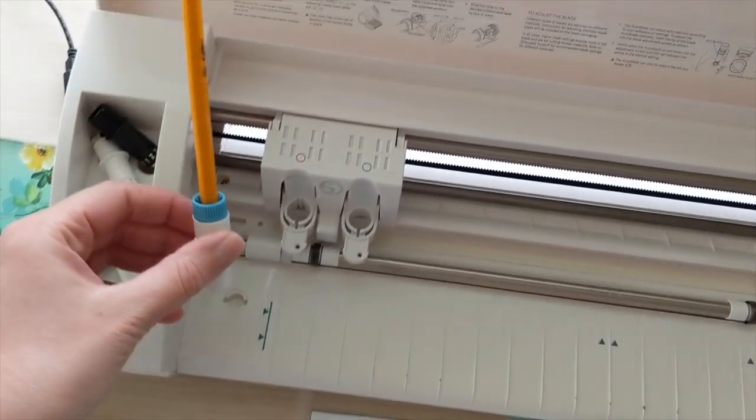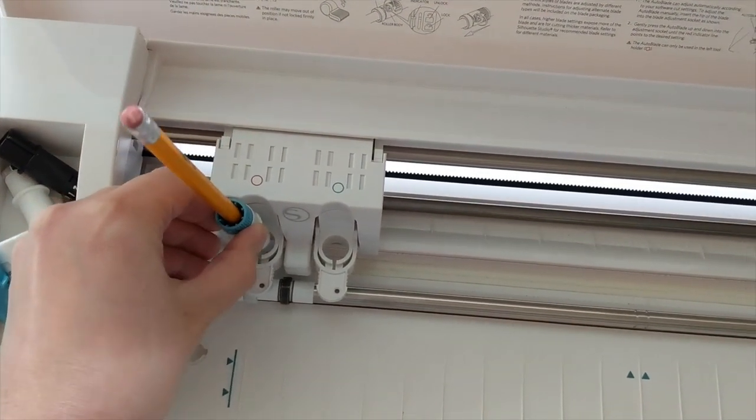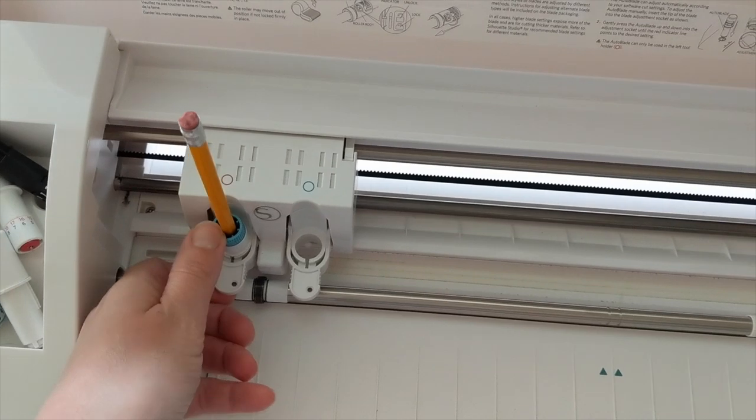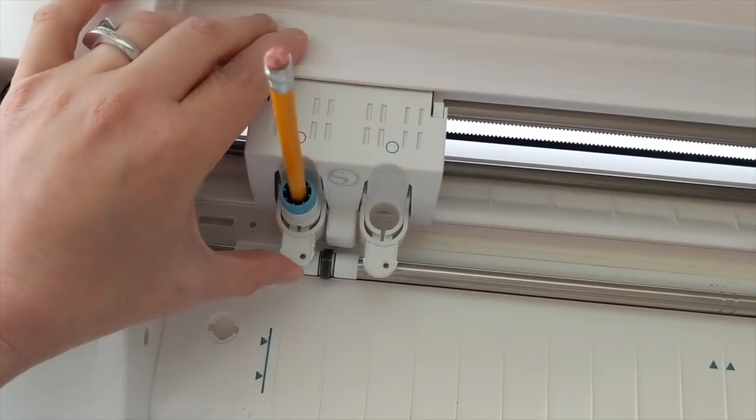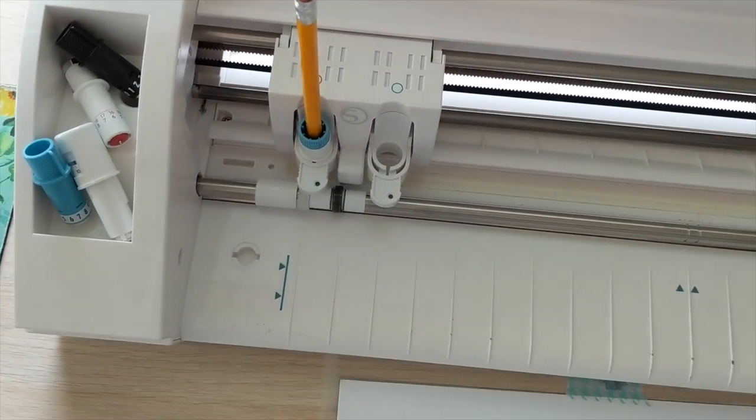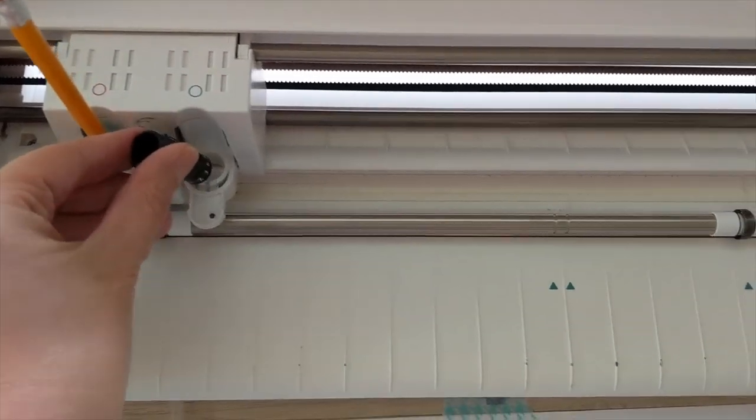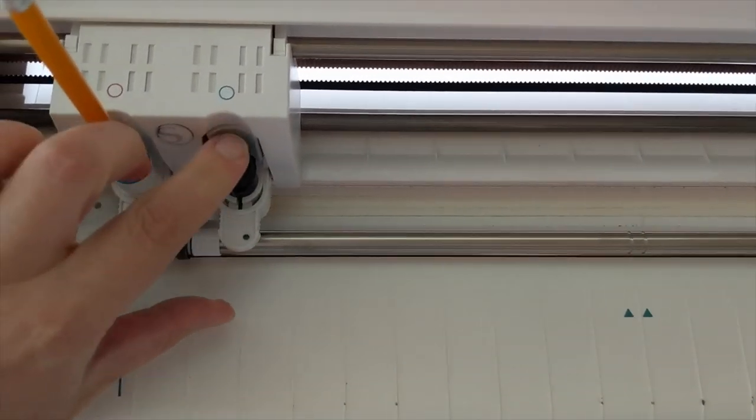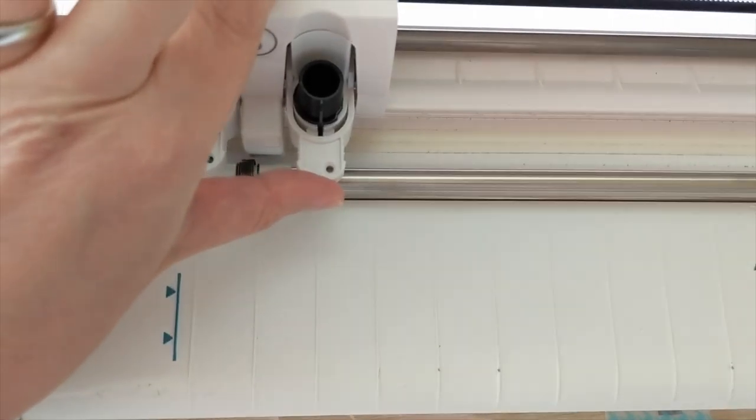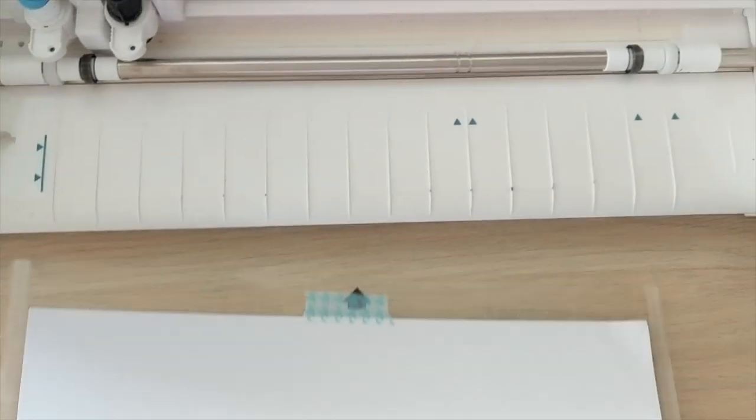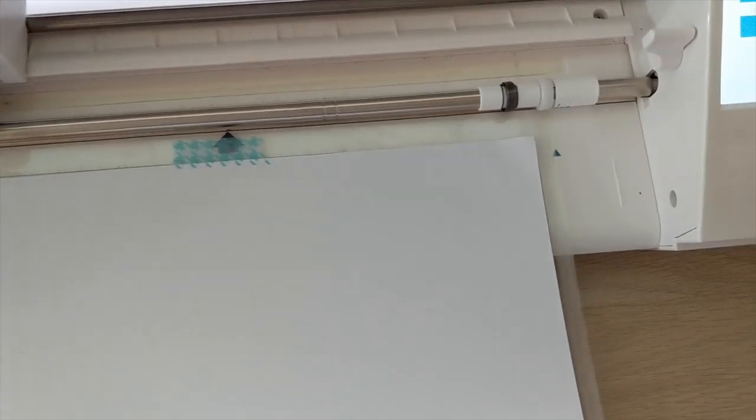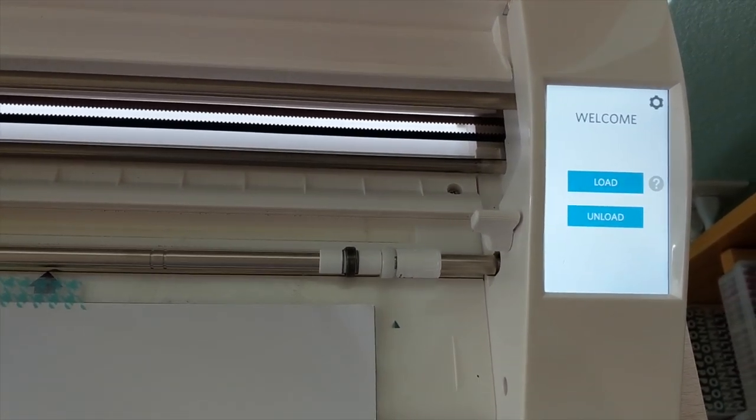So here is my pencil ready to go. I'm making sure to put it in the left tool with the red circle, just like how it was in the Silhouette Studio with the red circle. It's going to sketch. The blue circle is going to cut, so put your ratchet blade in the right tool holder. And then you want to load your paper. I'm using smooth white cardstock. And load.